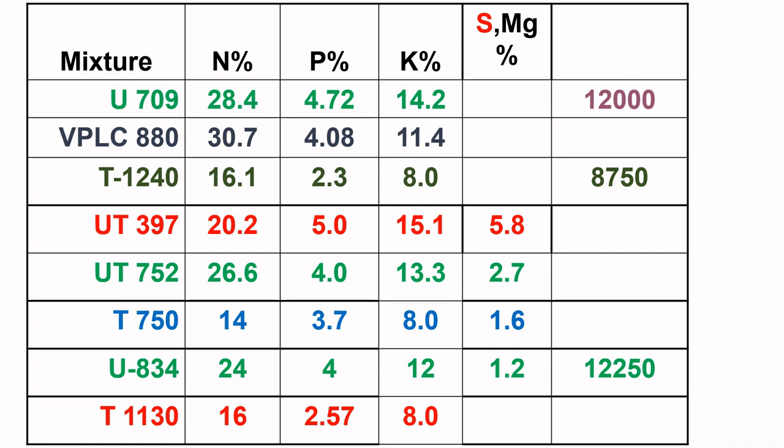U blends mean that nitrogen supply is given by urea. T blends use ammonium sulfate to supply nitrogen. UT means urea and ammonium sulfate are mixed together to give nitrogen to the plants — these are the differences between the different blends. VPSC means vegetative propagated low country — these are the different blends based on nitrogen supply.